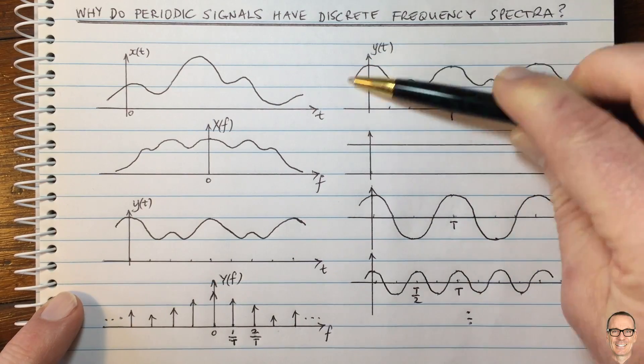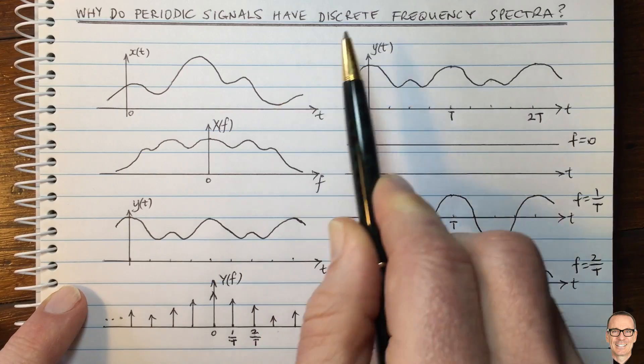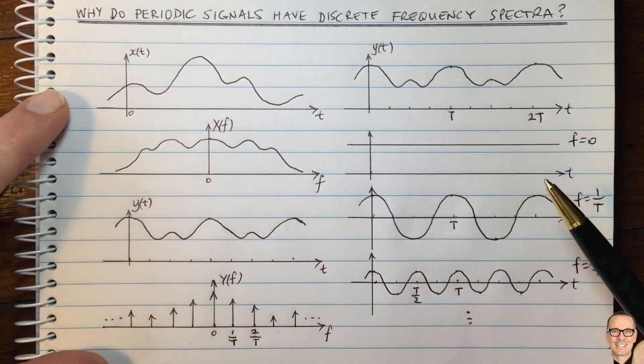So hopefully you can see by looking in the time domain and thinking about what's needed for a periodic signal, that therefore the spectra must be discrete for periodic signals.